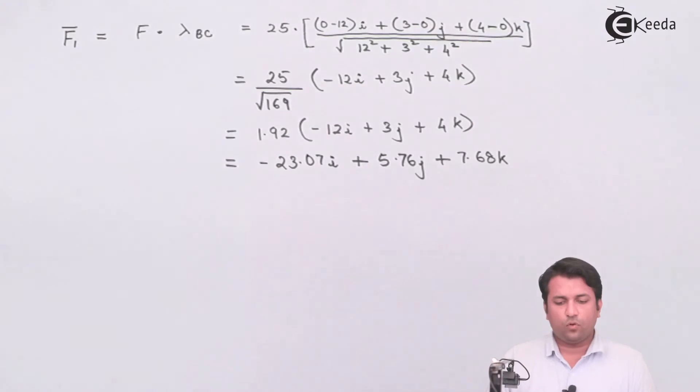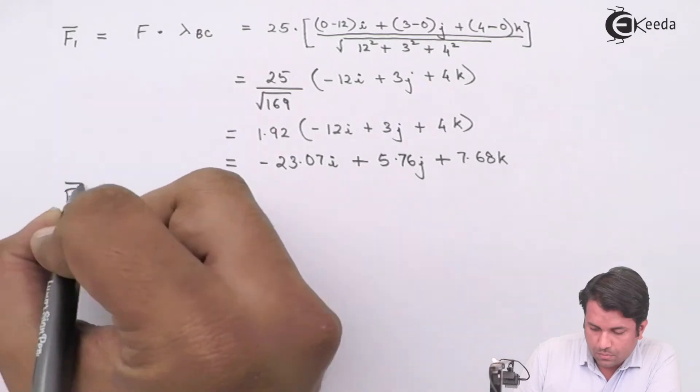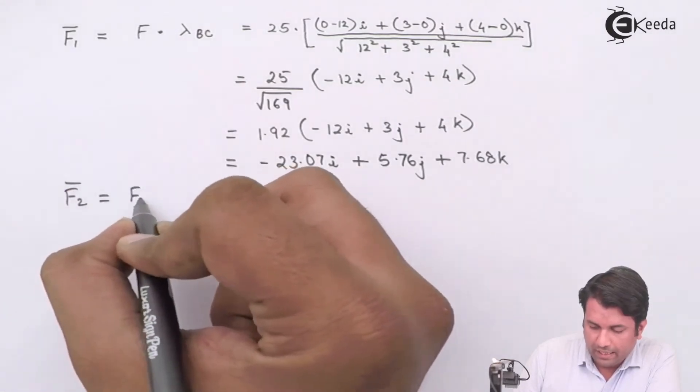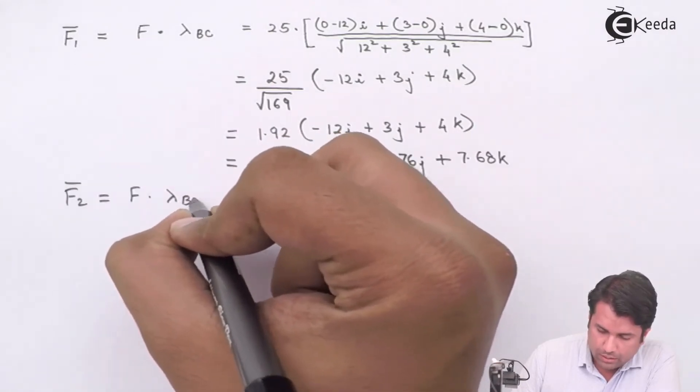Now I can similarly find the force vector F2. That will be the magnitude times the unit vector from B to D. I have got the force vector F2 as well.